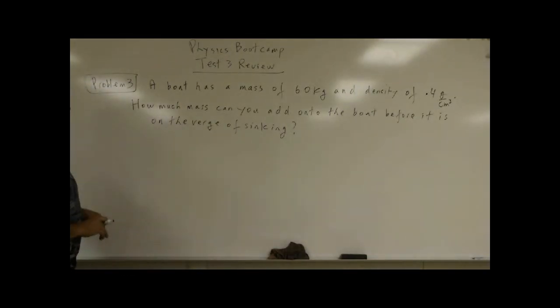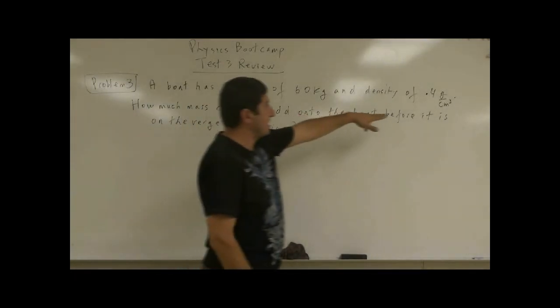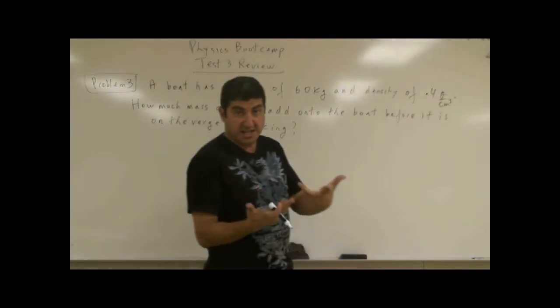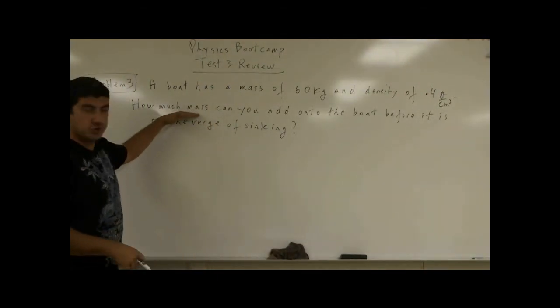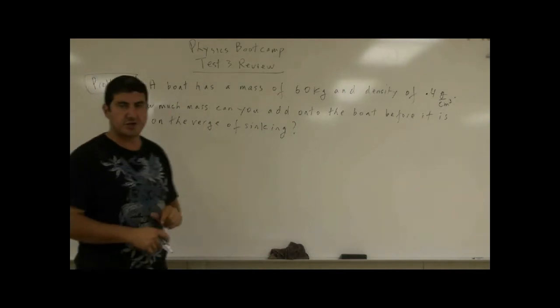Problem 3, test 3 review. A boat has a mass of 60 kilograms and its density is 0.4 grams per cubic centimeter. So it's less dense than water, which is 1 gram per cubic centimeter. How much mass can you add onto the boat before it is on the verge of sinking?